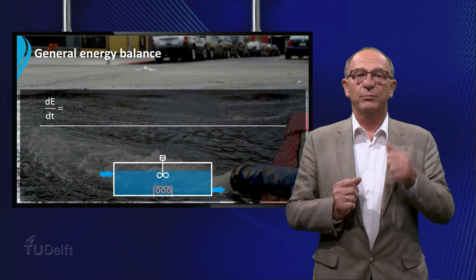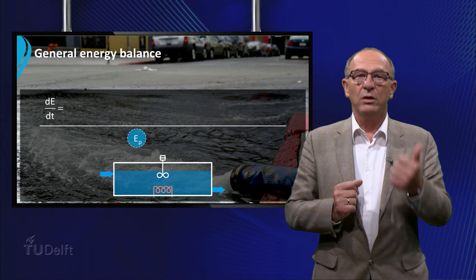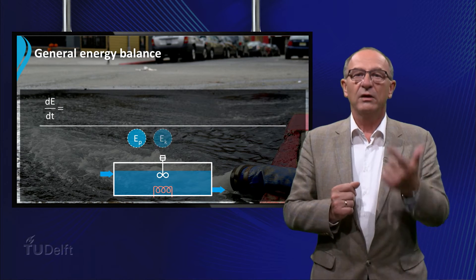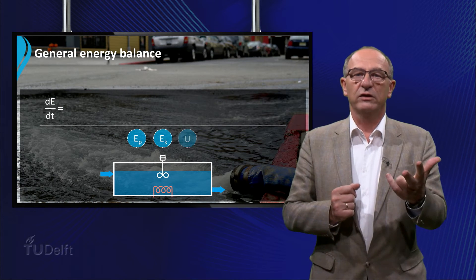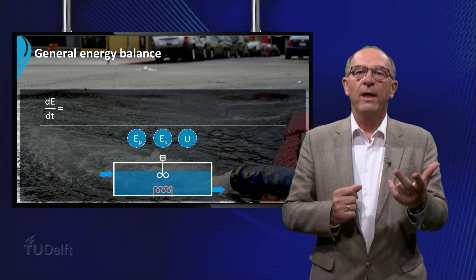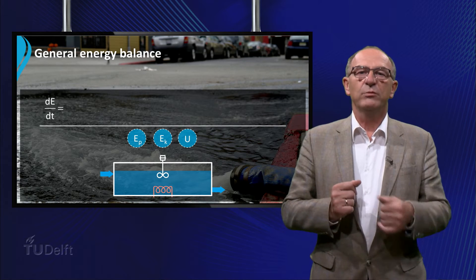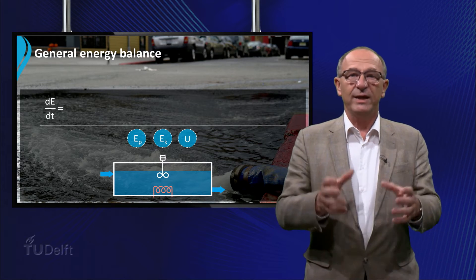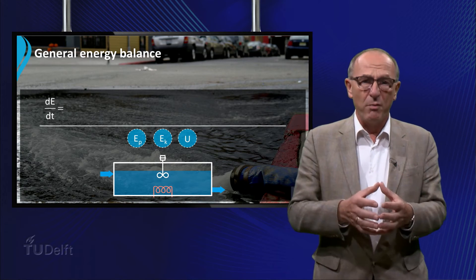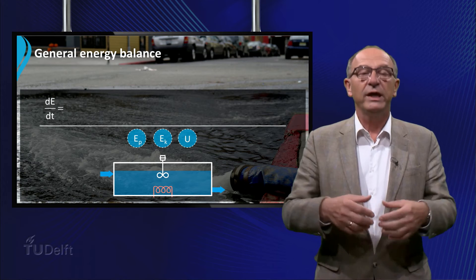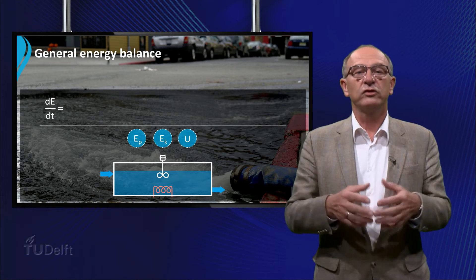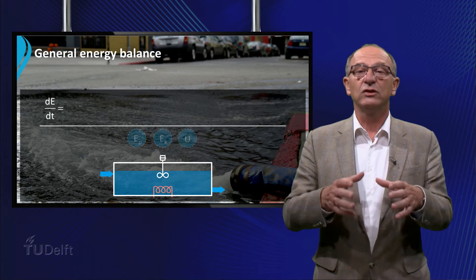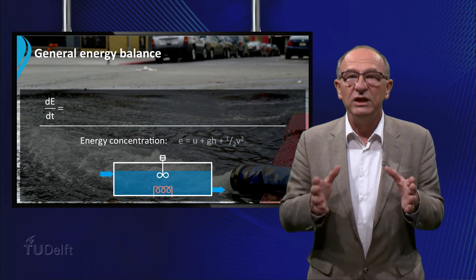Earlier we already talked about three different types of energy: potential energy, kinetic energy and internal energy. If we sum up these energies and take them all per unit of mass, we can introduce the so-called energy concentration E.